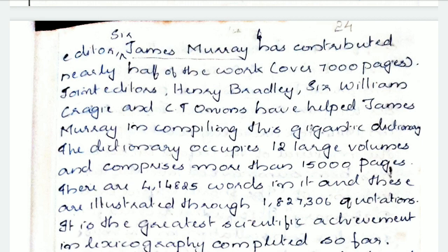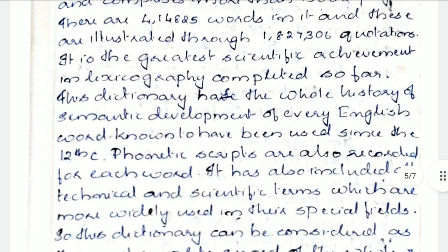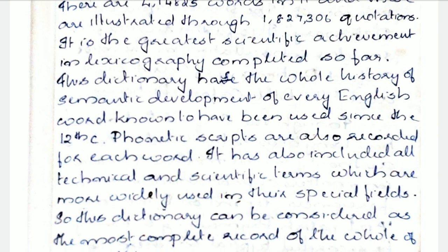Joint editors were Henry Bradley, Sir William Craigie, C.T. Onions, etc. This dictionary occupies 12 large volumes and comprises more than 15,000 pages, and the total number of words in it are 414,825, illustrated through over 1,000,000 quotations. This is the kind of greatest achievement at that time. It was considered a great achievement in the field of lexicography, and it has that importance in the semantic development of every English word known to have been used since the 12th century. That's why it took such a long time for the compilation.